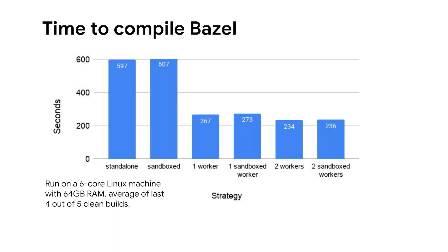What's it all about? Performance. This slide shows the time it takes to do a clean build of Bazel itself on a six-core Linux machine. On the left, the regular non-worker builds, and on the right, with workers. As you can see, with workers your build is about three times as fast. You can also see that sandboxing isn't actually very expensive. And this is a clean build — for incremental builds you can get even better performance, up to six times speedup, as we've seen in some of our incremental benchmarks.